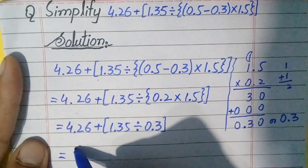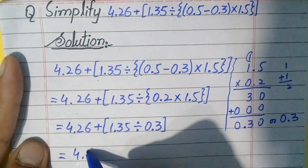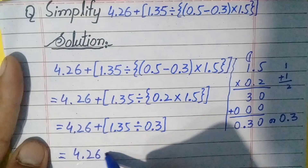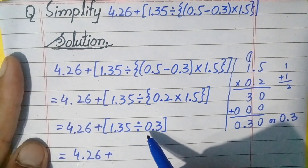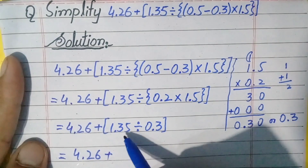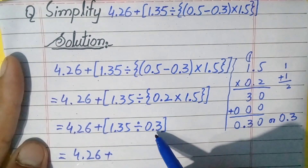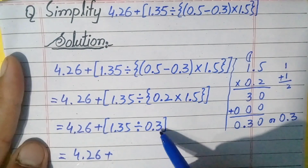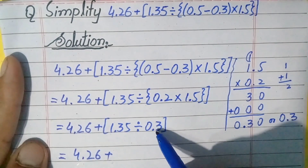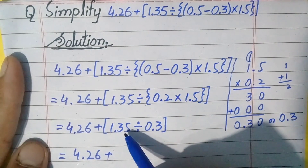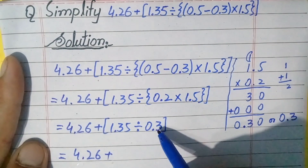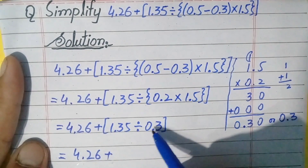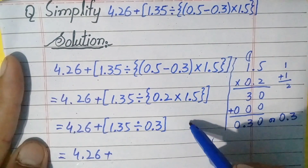To do the division of two decimal numbers, remember that when dividing a decimal number by a decimal number, we make the divisor a whole number, then divide. So we will make this number a whole number. Let's go to the rough work.